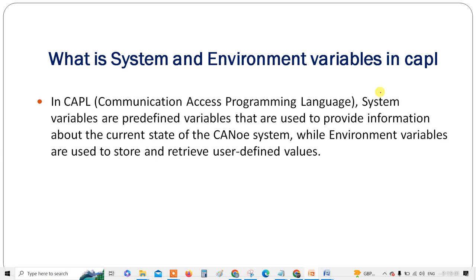So what is a system variable and environment variable? In CAPL, system variables are predefined variables — just remember that terminology. They are used to provide information about the current state of the CAPL system or CANoe organization. Environment variables, on the other hand, are used to store and retrieve user-defined values.